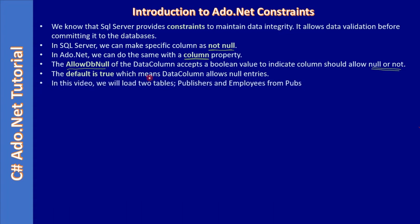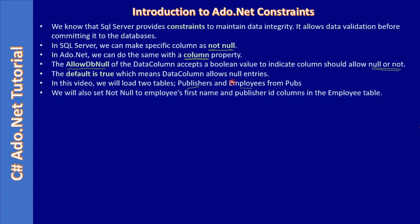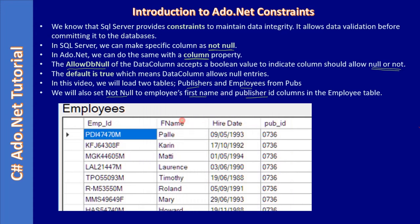In this video we will load two data tables — one is publisher and another one is employees — from the Pubs database. We will also set not null to the employee's first name and publisher ID columns. You can see the employees table loaded into the corresponding DataGridView with four columns, and we will set not null to the first name column as well as the publisher ID.